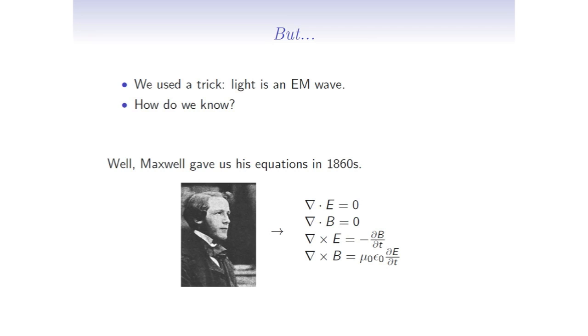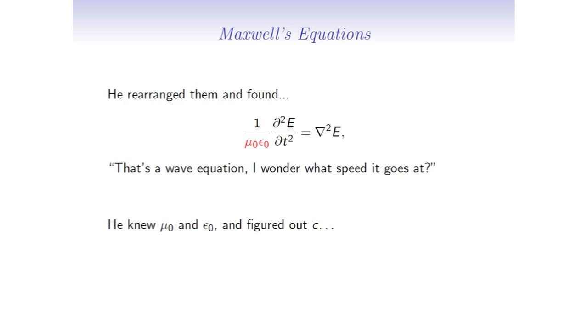Now, I used a trick though. Where did I get my trick from? I used the fact that light is an electromagnetic wave. And how do we know that? Maxwell in the 1860s was looking at electric stuff and magnet stuff, and he came up with these equations. And when he messed around with them a bit, he discovered he could rearrange them into this form, which is a wave equation.